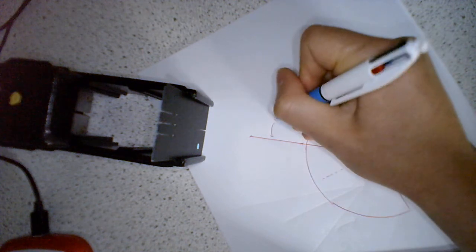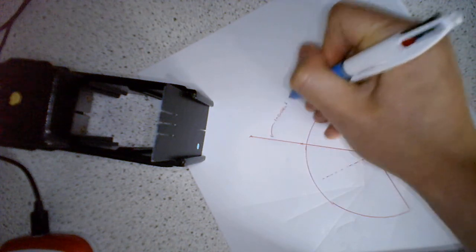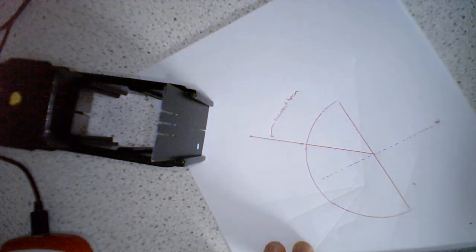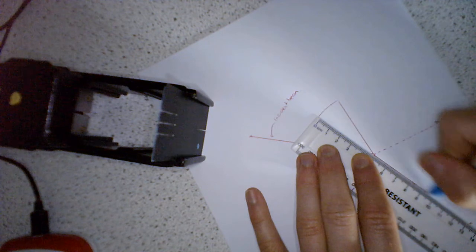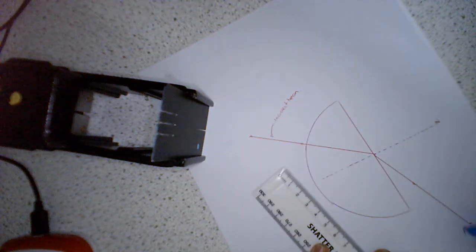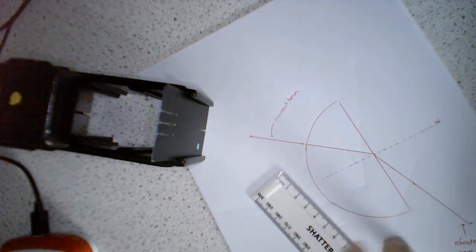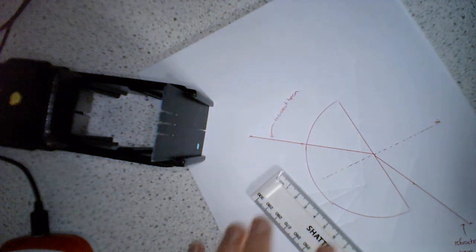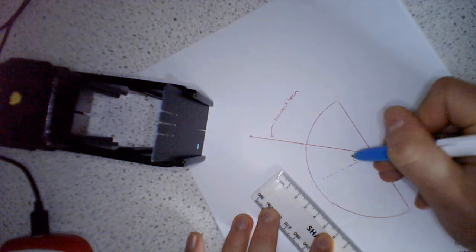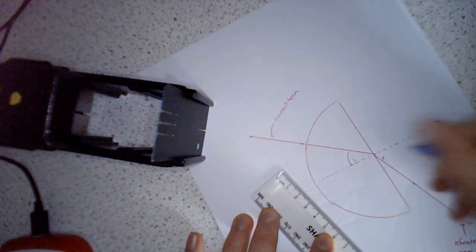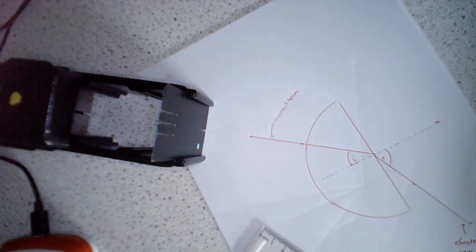Okay, so this here, this over here is what we'd call our incident beam. This here is what we'd call our refracted beam. So we want to measure the angle of incidence and the angle of refraction, which are always measured to the normal. So we want to measure this angle in here and this angle in here.